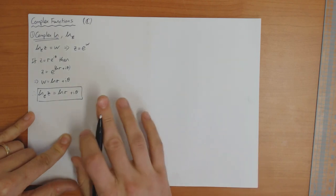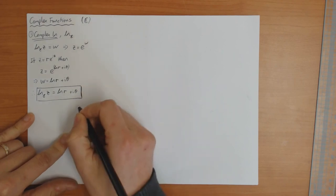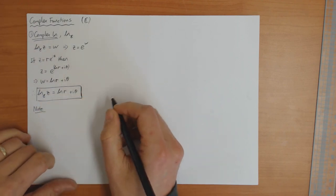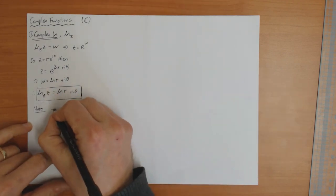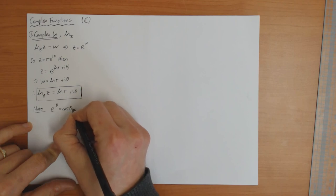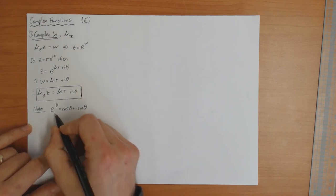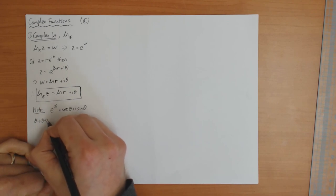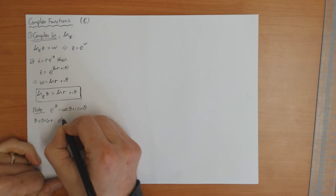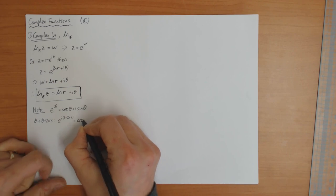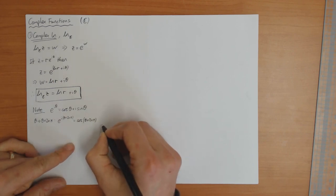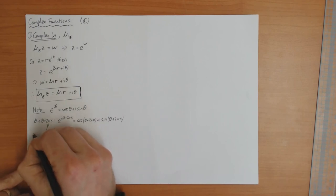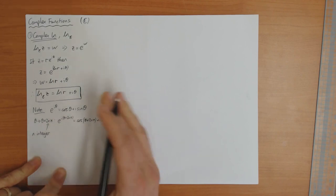So that defines the logarithm, and that might look quite easy. But there is something which is a bit tricky about this — this function is not completely well defined. If you look at Euler's formula, which we worked out before, e^(iθ) = cos θ + i sin θ. Then if I set θ goes to θ + 2nπ, then I get e^(i(θ + 2nπ)) = cos(θ + 2nπ) + i sin(θ + 2nπ), where n is an integer: 1, 2, 3, 4, and so on.